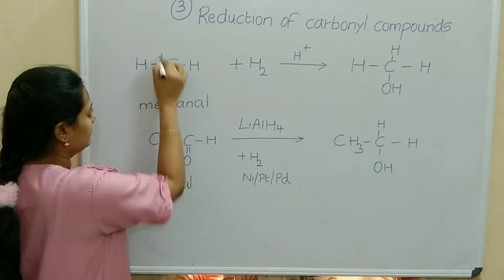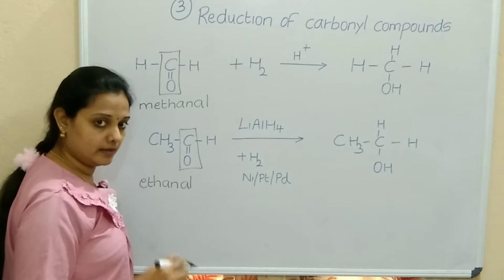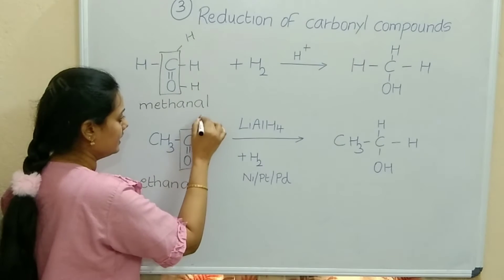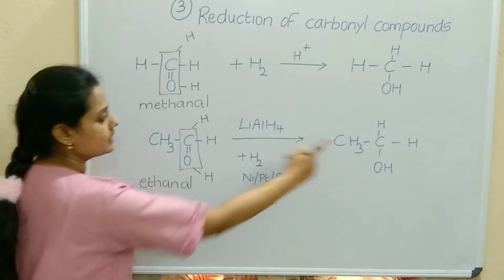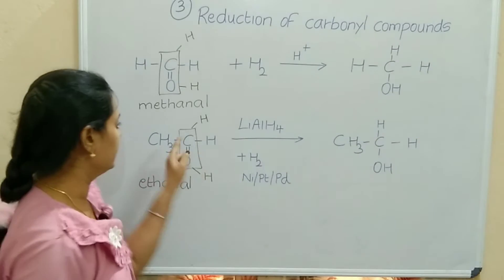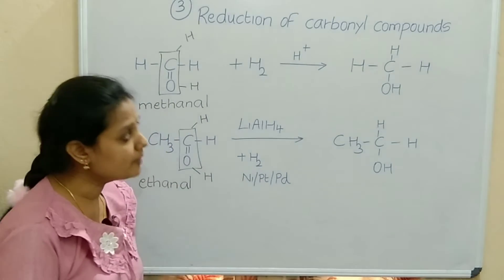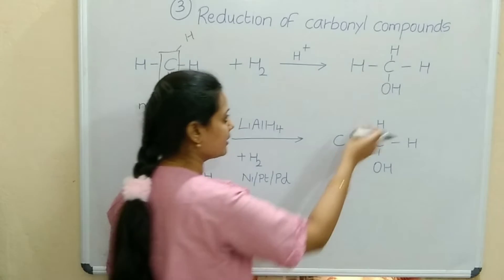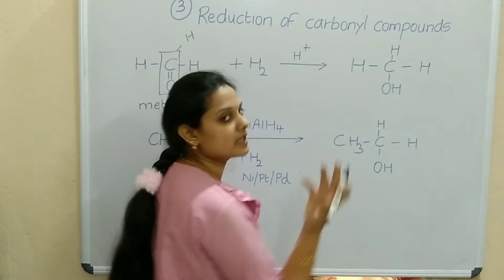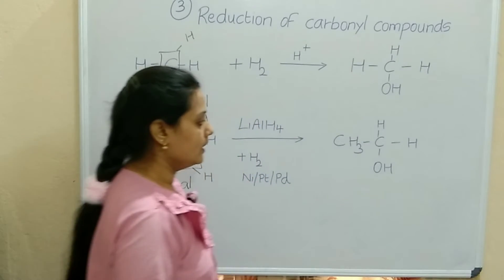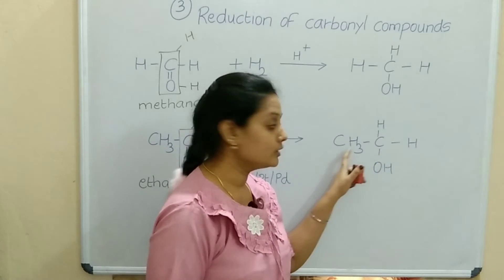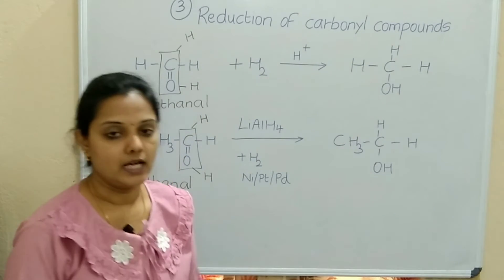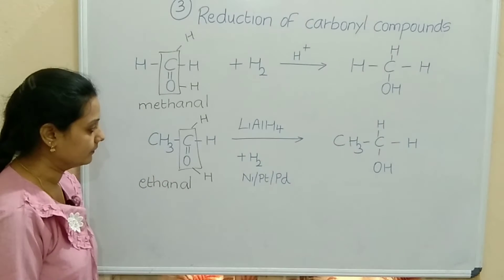Adding H2 to the functional group: one hydrogen goes to the carbon, one hydrogen goes to the oxygen. So OH attaches, and hydrogen is added to the carbon. The carbon with OH is attached to no other carbons in methanal, making it primary. For ethanal, the OH-bearing carbon is attached to one more carbon — that is also primary. So aldehydes give primary alcohols on reduction.